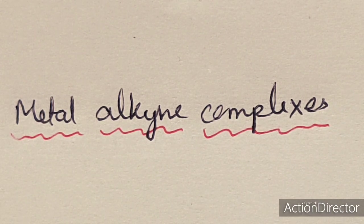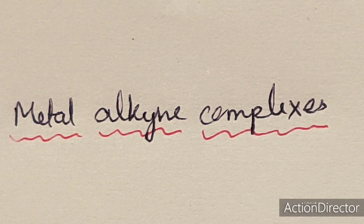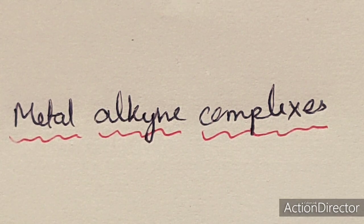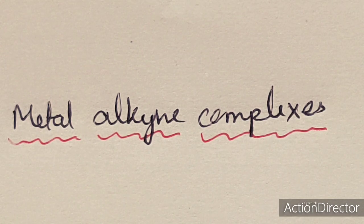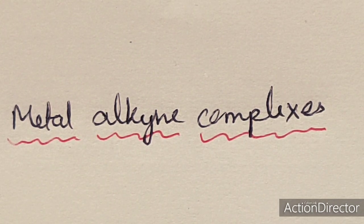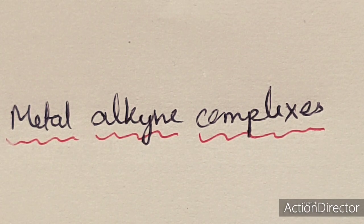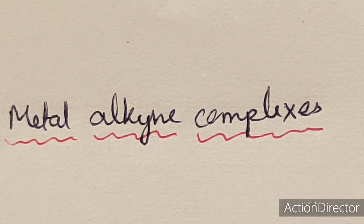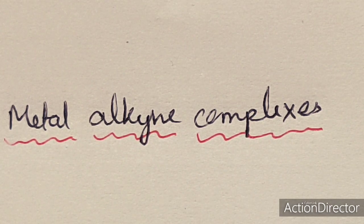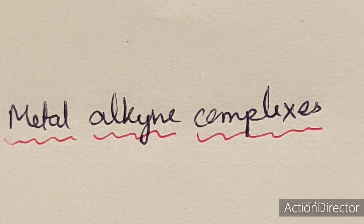Welcome to today's lecture on metal alkyne complexes. In these complexes, there is bonding between the metal and the alkyne group. The alkyne group is a pi bonding ligand. We have already studied metal olefinic bonding between metal and alkene. Now in metal alkyne complexes, there is sigma bonding when the alkyne ligand donates its electron pair to the metal, and the metal can back donate its electron pair to the anti-bonding orbital of the alkyne ligand.